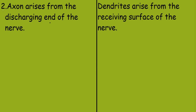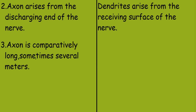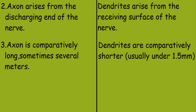The third point: axon is comparatively long, sometimes several meters, while dendrites are comparatively shorter, usually under 1.5 mm.